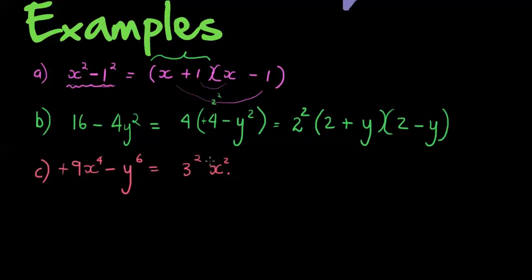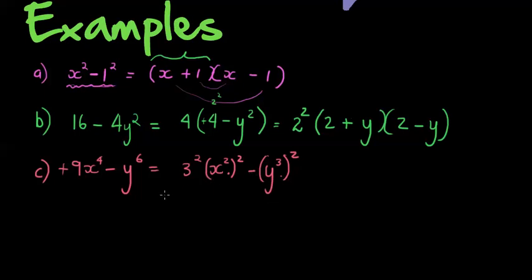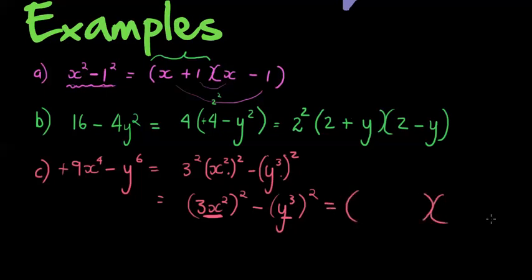So x to the power of 4 is x squared squared. For y to the power of 6, that is 3 y's times another 3 y's, so it's y cubed squared. What I have is 3x squared being squared, minus y to the power of 3 being squared — that's the difference of two squares. So the factored form is 3x squared plus y cubed, times 3x squared minus y cubed.